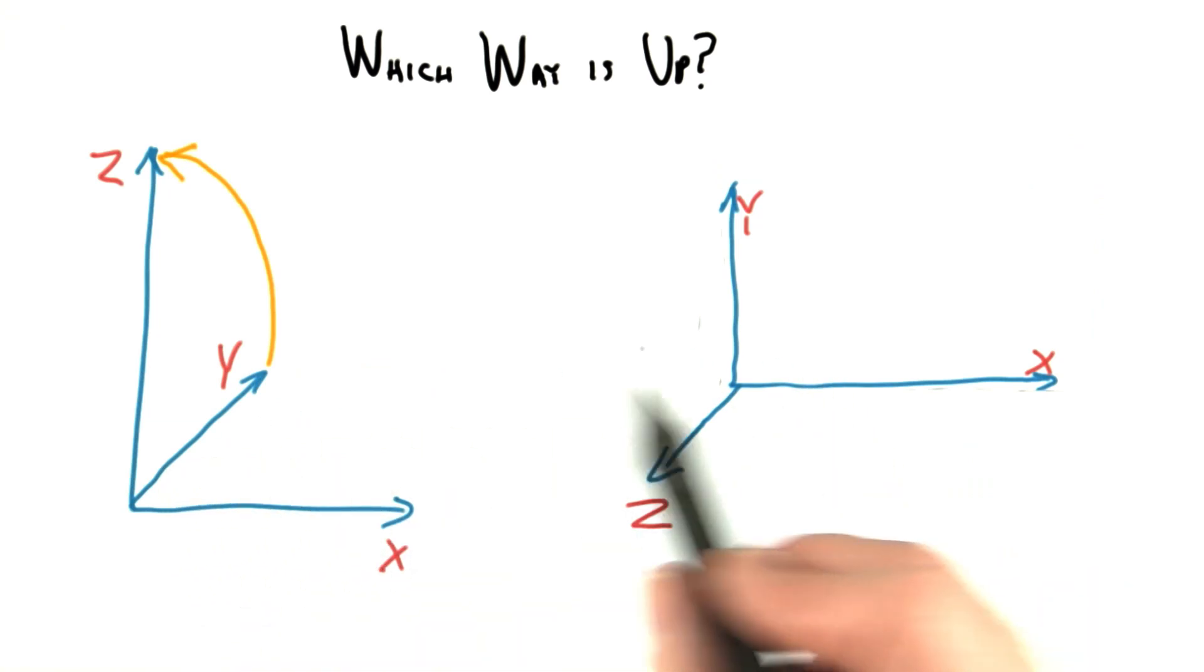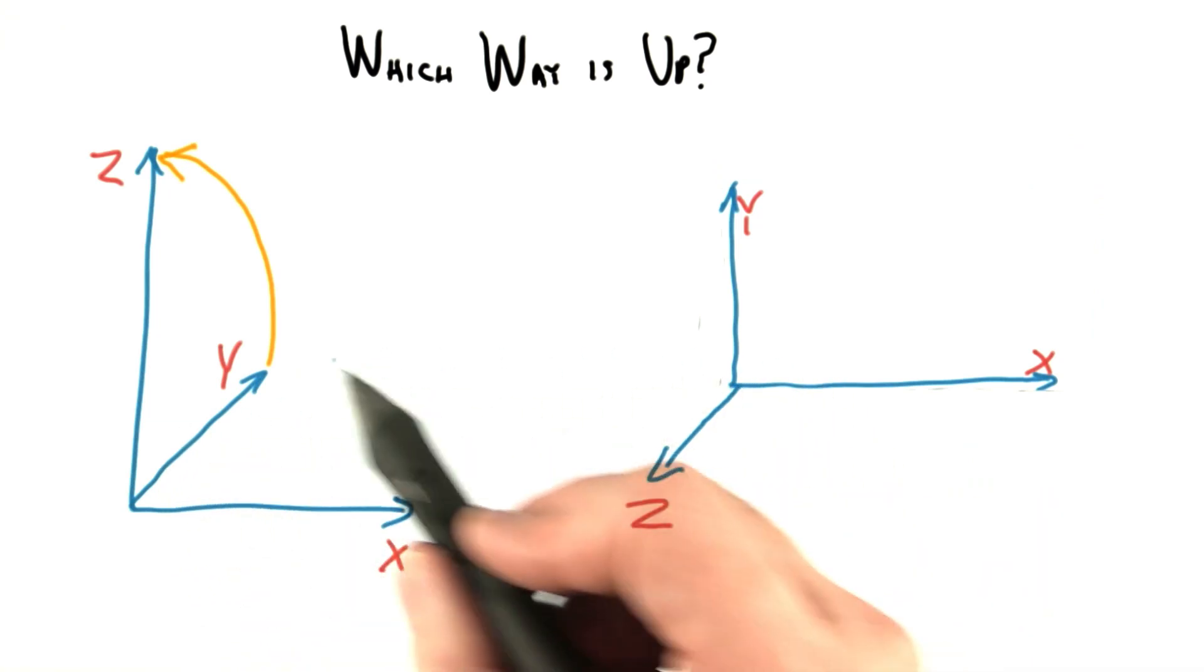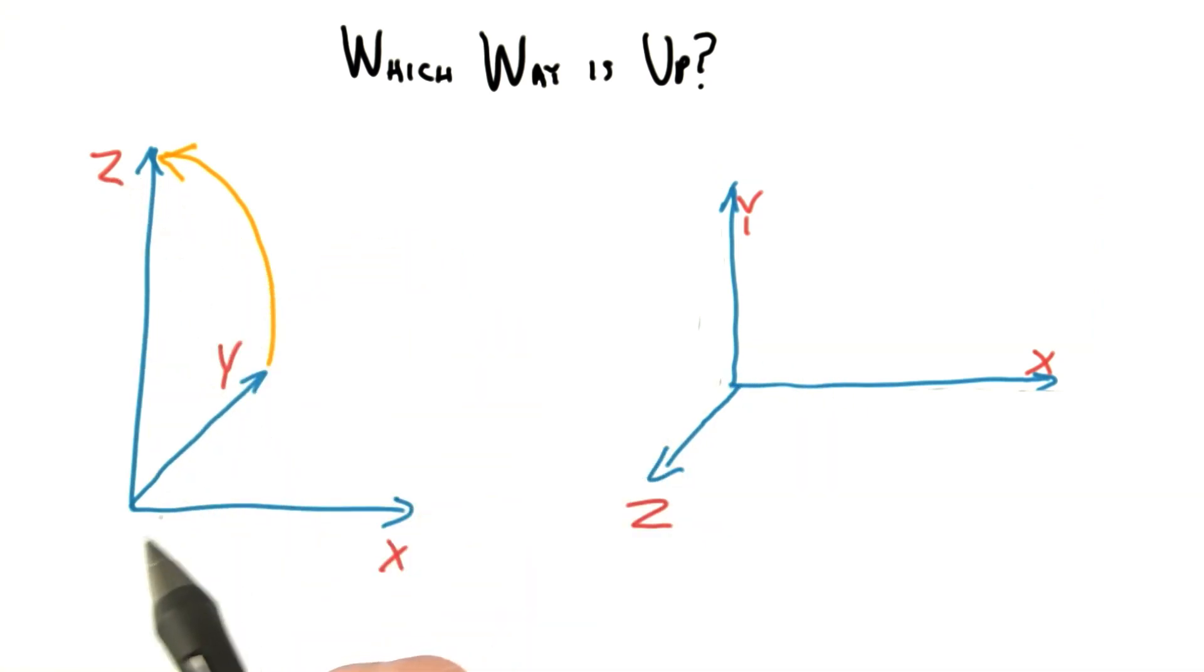The difference between these two coordinate systems is just a 90 degree rotation along the x-axis, so it's easy enough to fix. We'll talk about rotations in a later unit too.